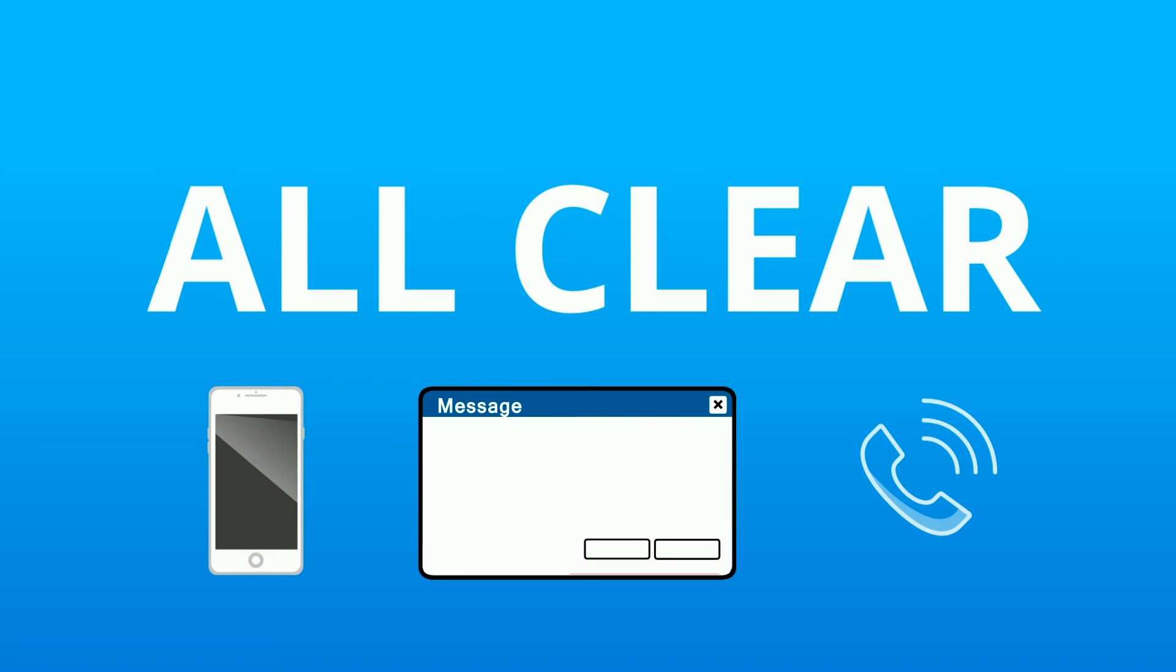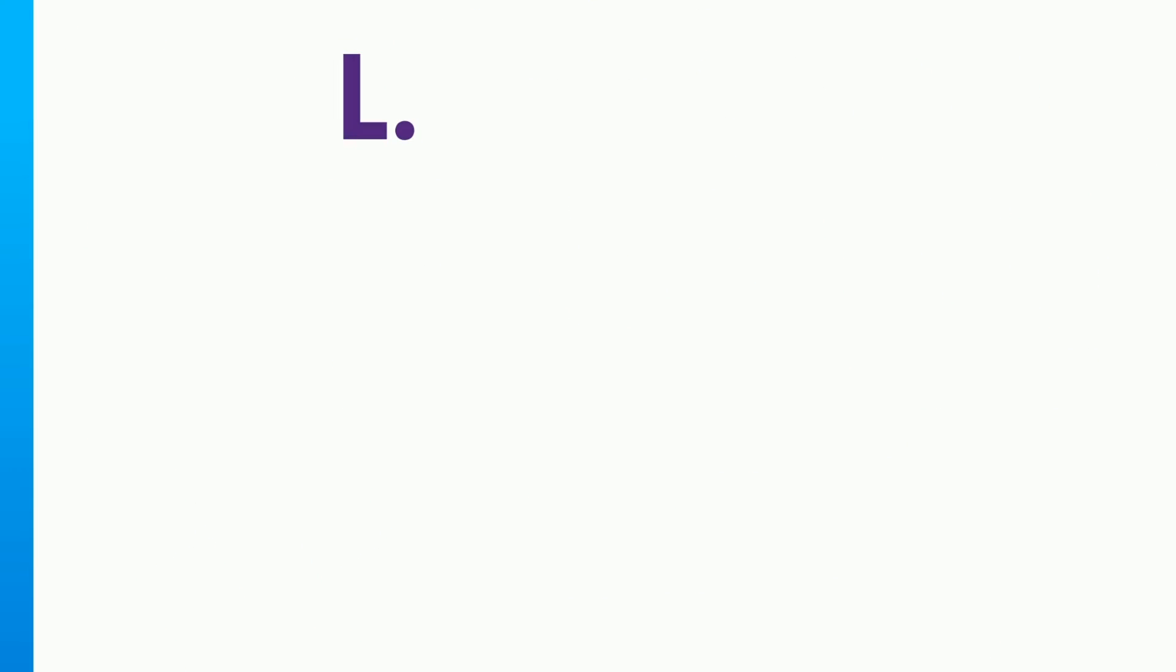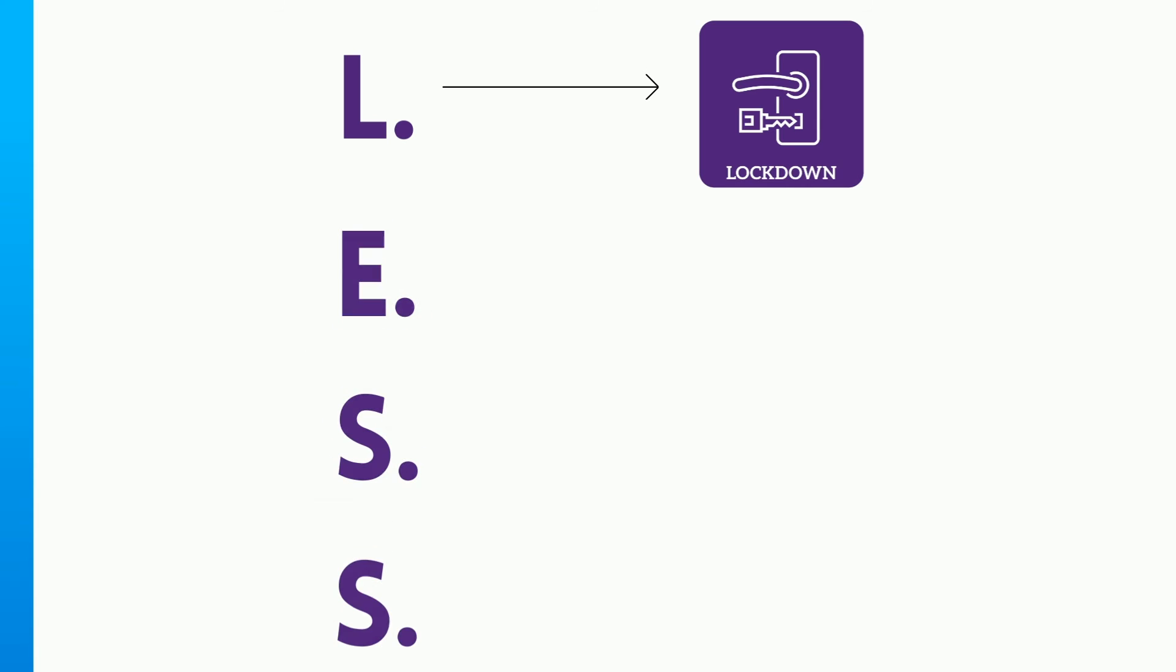After a lockdown has been announced via outdoor sirens and indoor speakers, you will get a TCU alert message on your cell phone informing you of the latest safety information and why you are being instructed to lock down. When the crisis has ended, TCU will send out the all-clear message through the TCU alert emergency mass notification system via your cell phone, email, and phone call. Now that we've talked about what the L in less means, let's talk about what the E stands for.